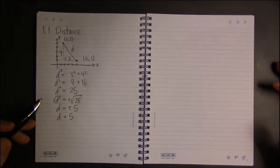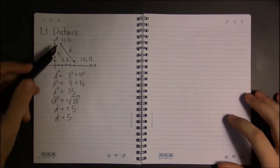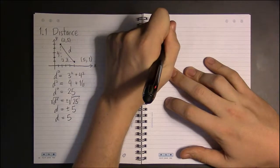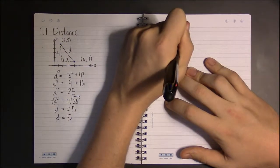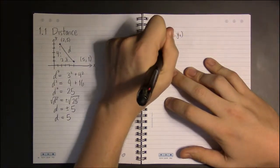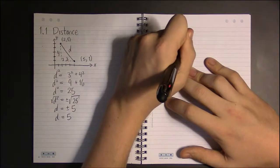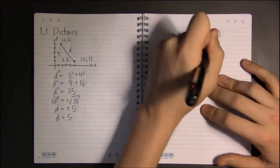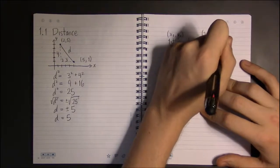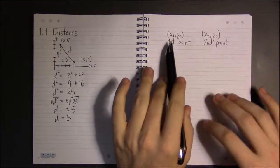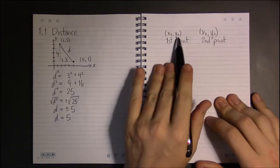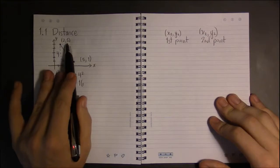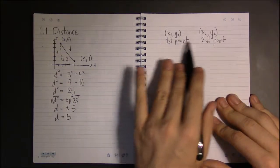So how do we generalize this? Well, suppose we have two arbitrary points. We'll call them x1, y1, that's our first point, and x2, y2, this is our second point. And my thought here is that x1, y1, x2, and y2 are all just numbers, just like they were here: 2, 5, 5, 1. All these things would just be numbers.